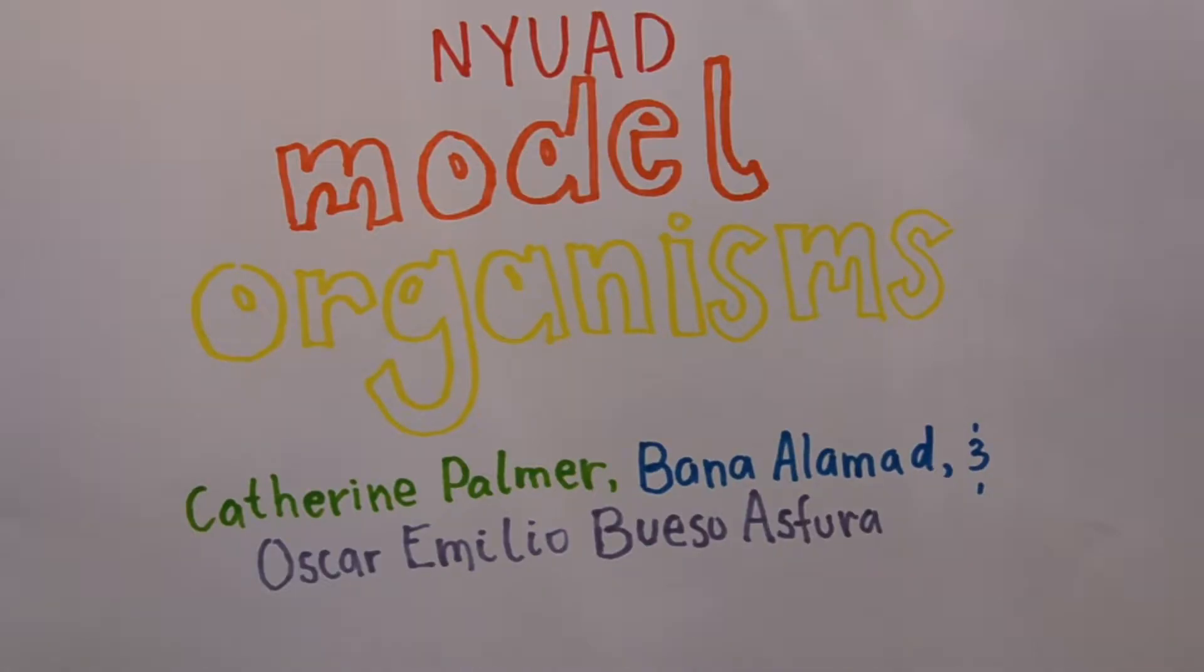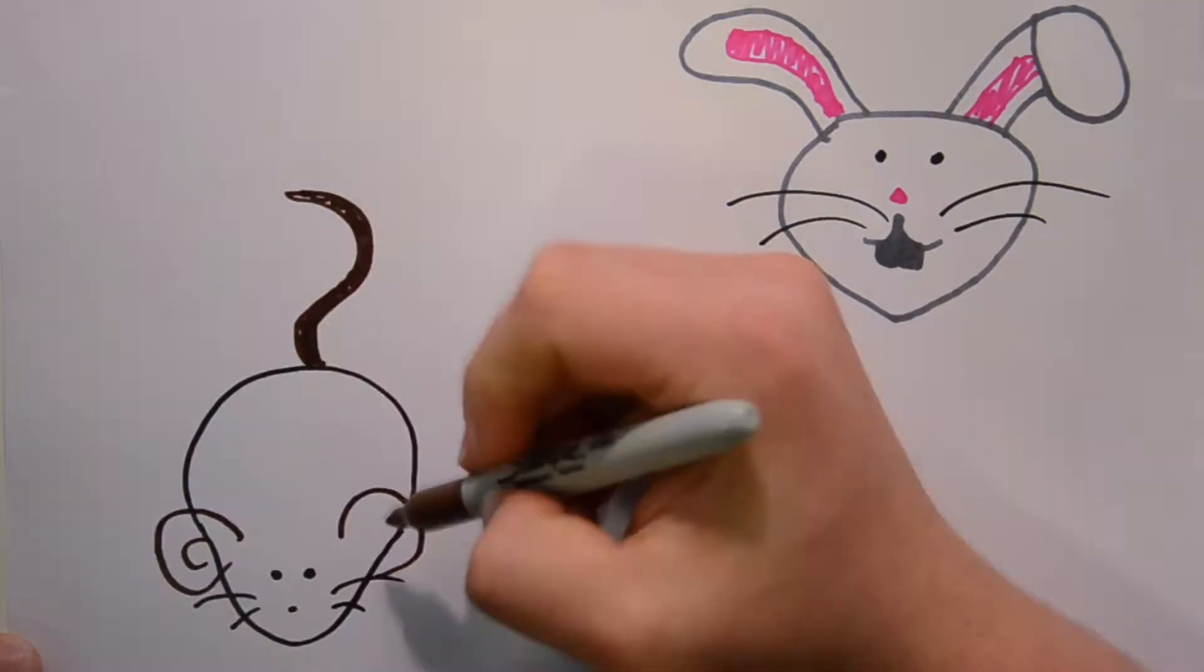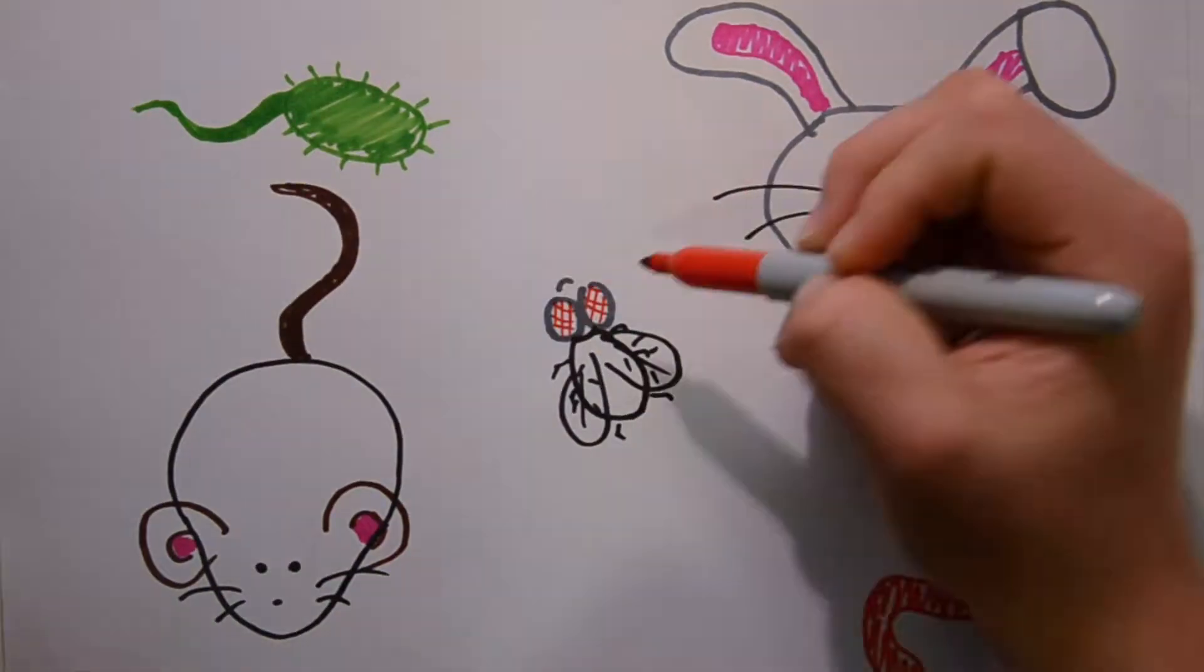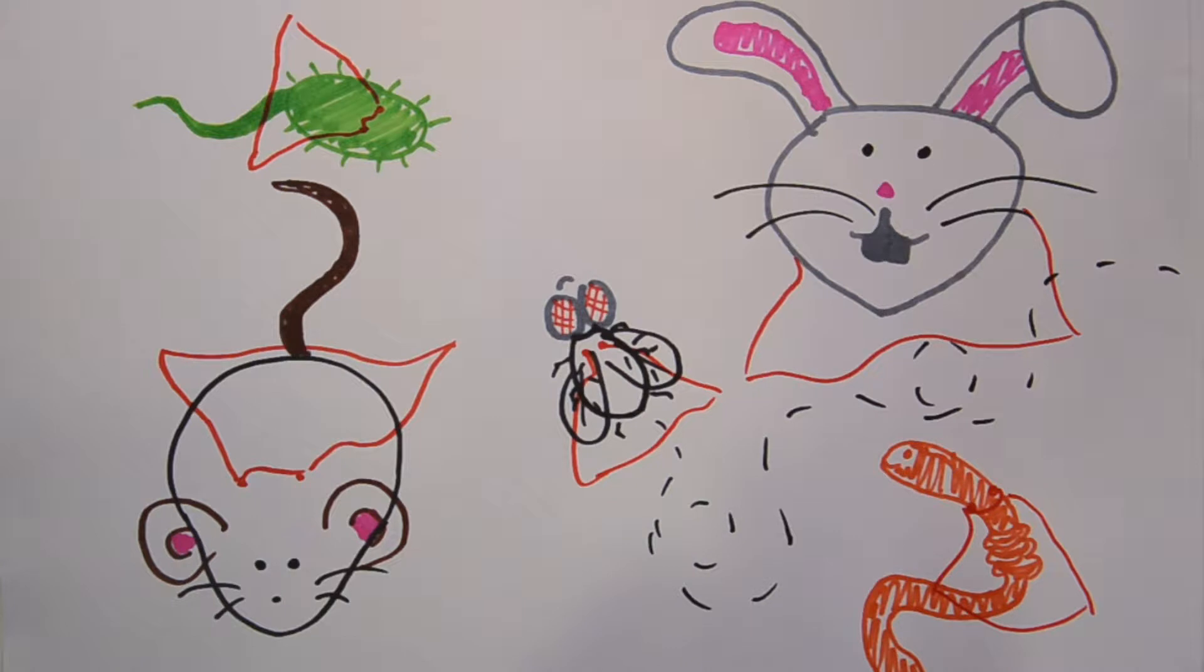Model organisms. You may not know it, but many things around you have been studied on model organisms. They are like the invisible heroes of science. Researchers use model organisms to study biological processes instead of using human subjects.